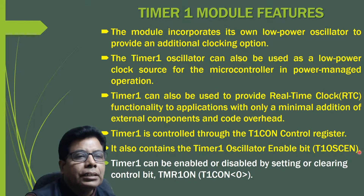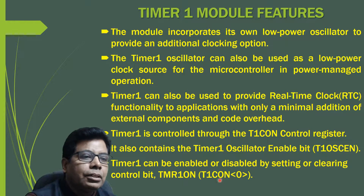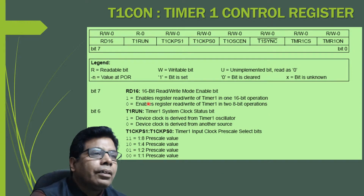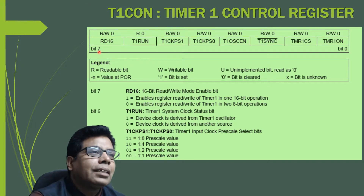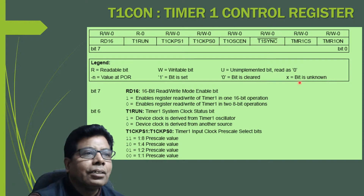Timer 1 can be enabled or disabled by setting or clearing the control bit Timer 1 ON, which is bit 0. The T1CON register has 8 bits, from bit 0 to bit 7. The notation R/W means readable and writable, R only means read-only, a 0 indicates the bit is cleared, 1 means set, and X means unknown value at reset.